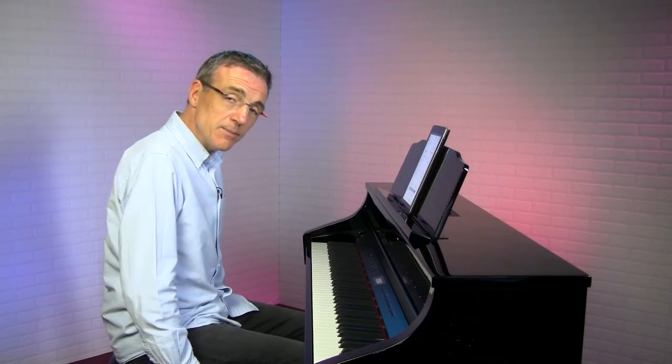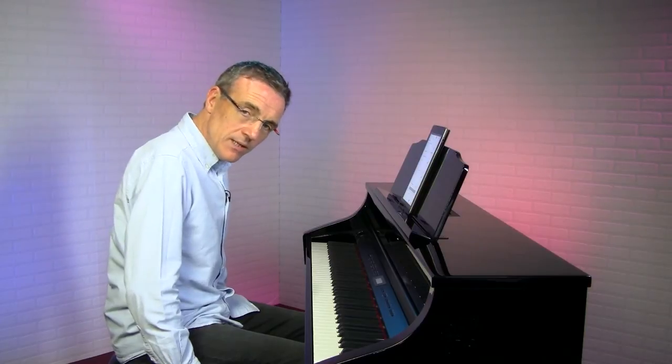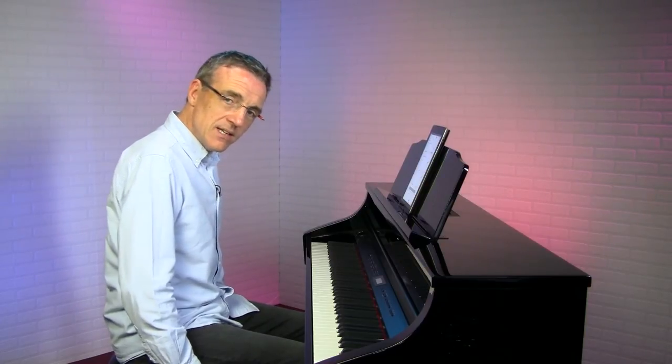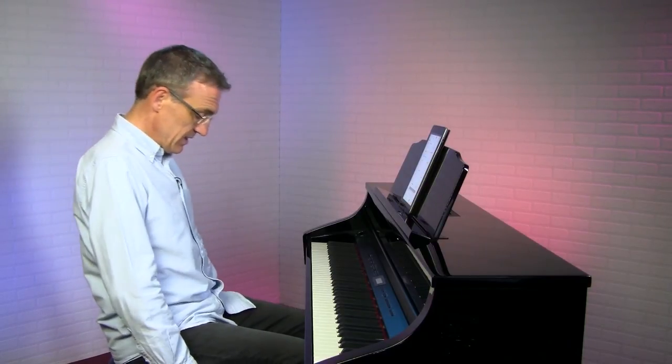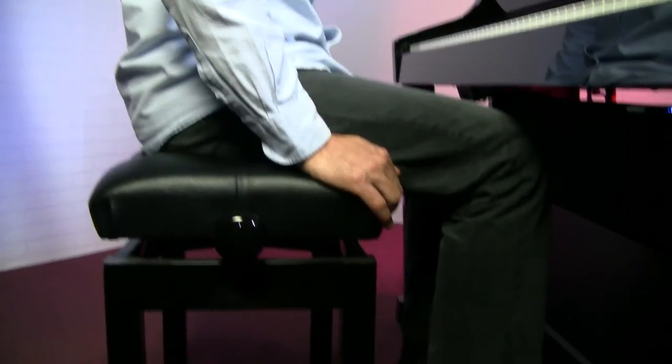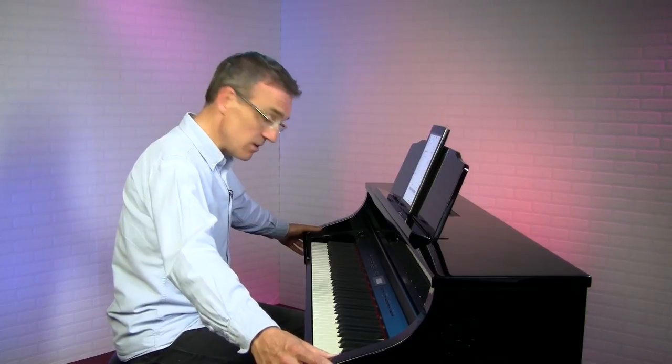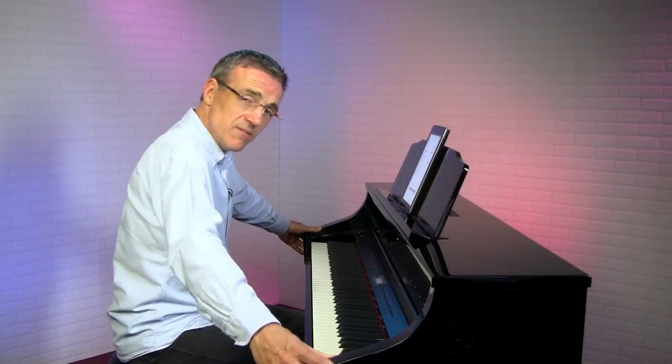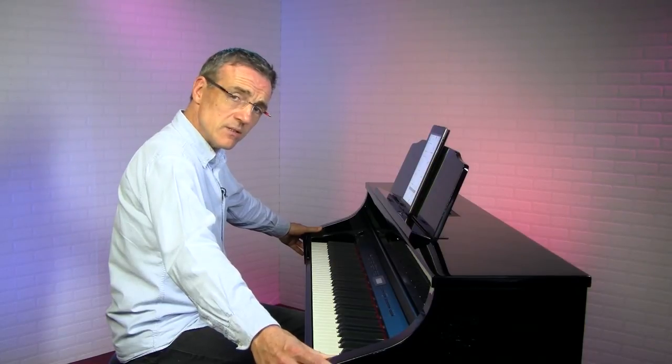When it comes to sitting at the piano, there's two things you need to consider. Firstly, how far away you sit from the piano, and secondly, the height of the stool. So in terms of distance from the piano, sit on the stool, on the edge of the stool, with both feet firmly on the floor. And if you can touch both ends of the keyboard with only a slight stretch, then you're in the right position.